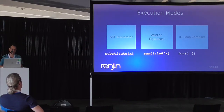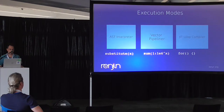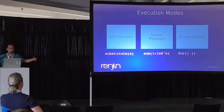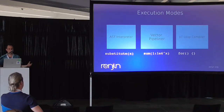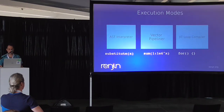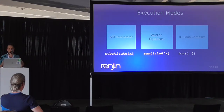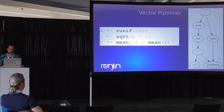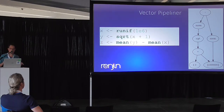Another type of workload we come across are big vector operations. R is actually quite good at this — for example, taking the sum of a large vector, subtracting two large vectors, or performing a small number of vectorized operations on a large data frame. You have lots of data and maybe two or three operations — a small number of operations compared to the overall data. The vector pipeliner's goal is to more efficiently execute these large operations on large data, and specifically to automatically parallelize them.